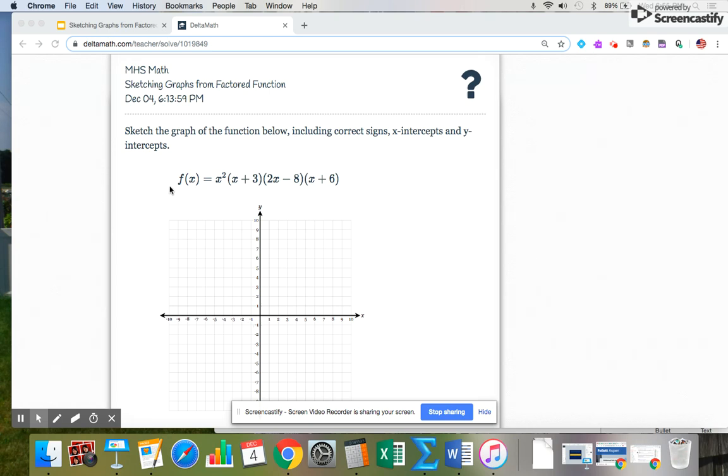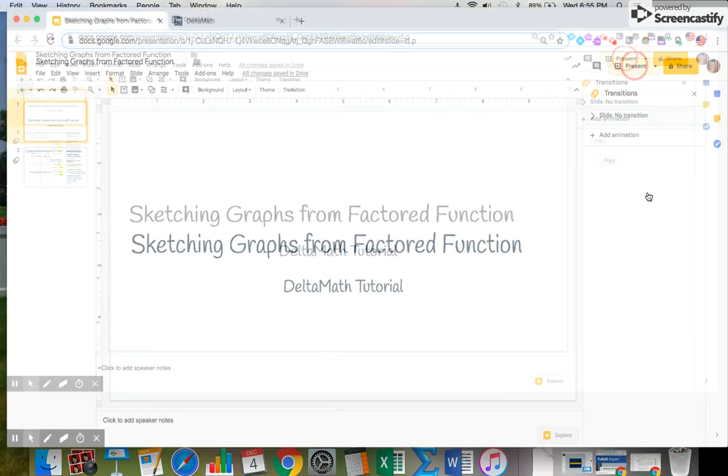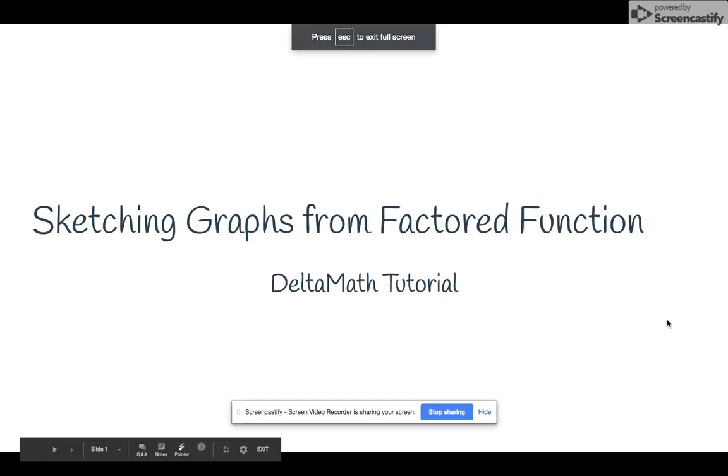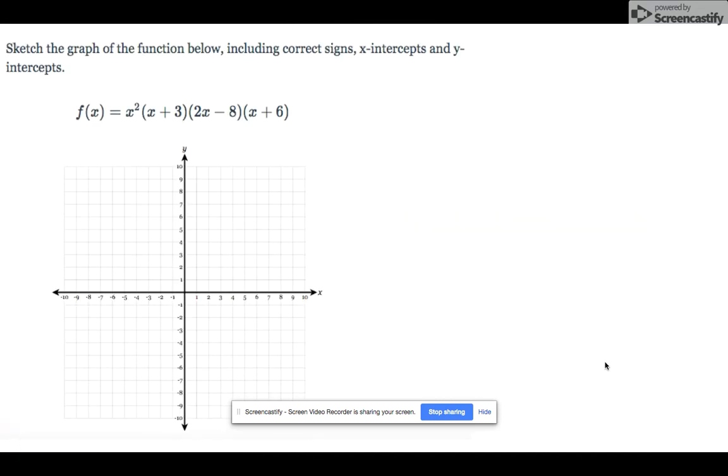So what I've done is taken this equation and put it into a Google slideshow, which I will show you how I would go about doing this. The function is given. I can see that there are four factors to this function, and there should be some questions you ask yourself to help you graph the function.